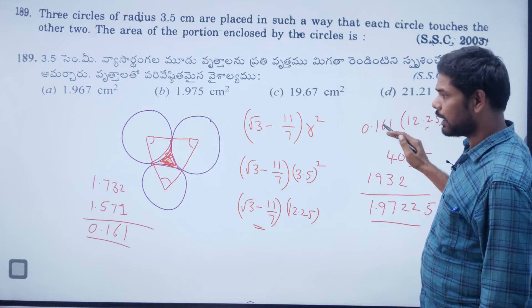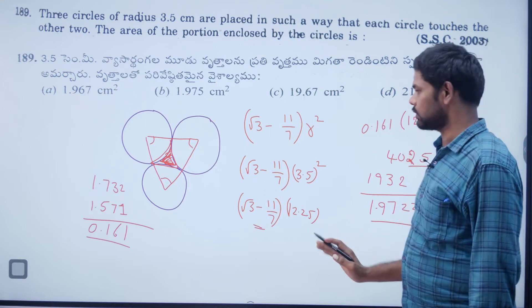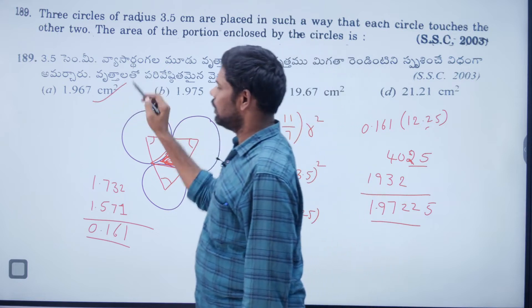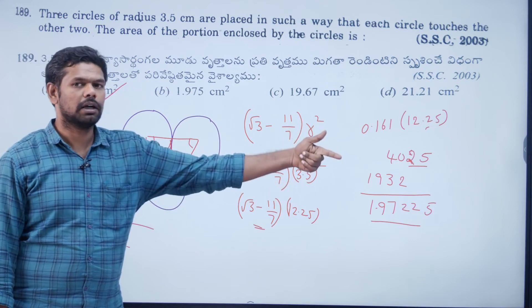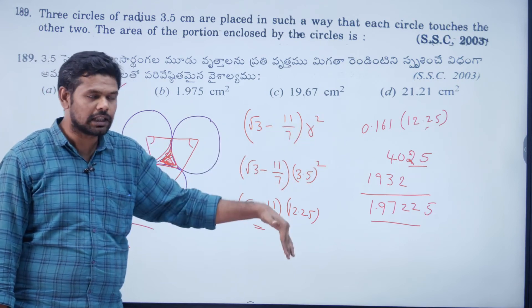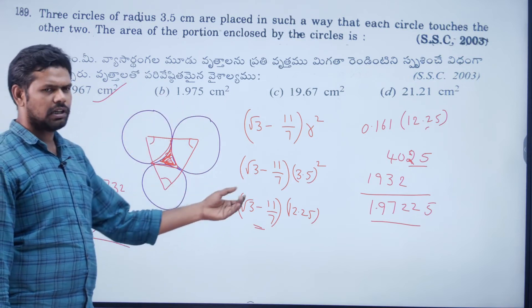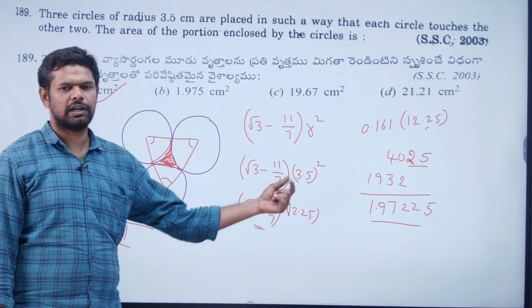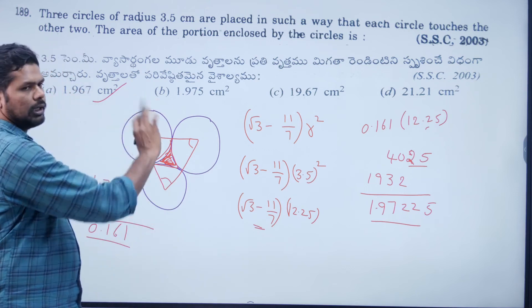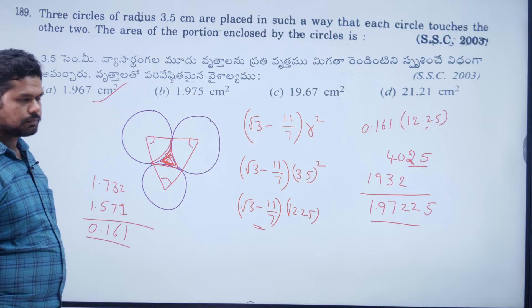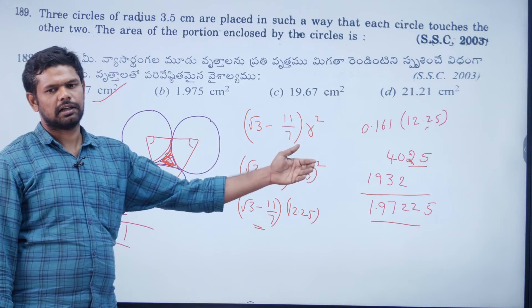If the value used is 0.161, the result is approximately 1.967 cm². Since √3 value at 4 digits rounds down to 1.732, using a slightly more precise value would decrease the result. So approximately 0.161 or 0.162.